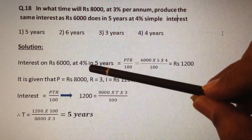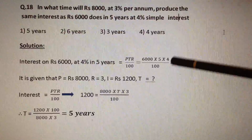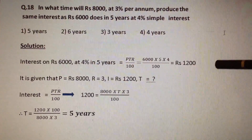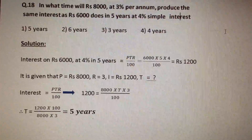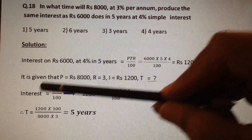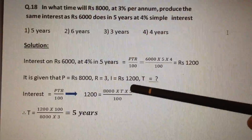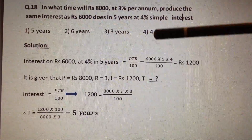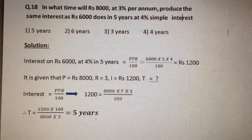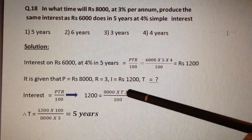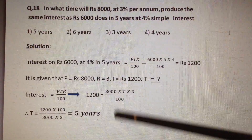Interest of Rs. 6000 at 4% per annum in 5 years is equal to PTR by 100, which is equal to 6000 into 5 into 4 by 100, which is Rs. 1200. This is the interest produced on Rs. 6000 at 4% for 5 years. In the first case, P equals Rs. 8000, rate of interest R equals 3, and interest is the same, which is Rs. 1200. We have to find the term T. Using the formula Interest equals PTR by 100: 1200 equals 8000 into T into 3 by 100. Therefore, T equals 1200 into 100 by 8000 into 3, which is equal to 5 years.